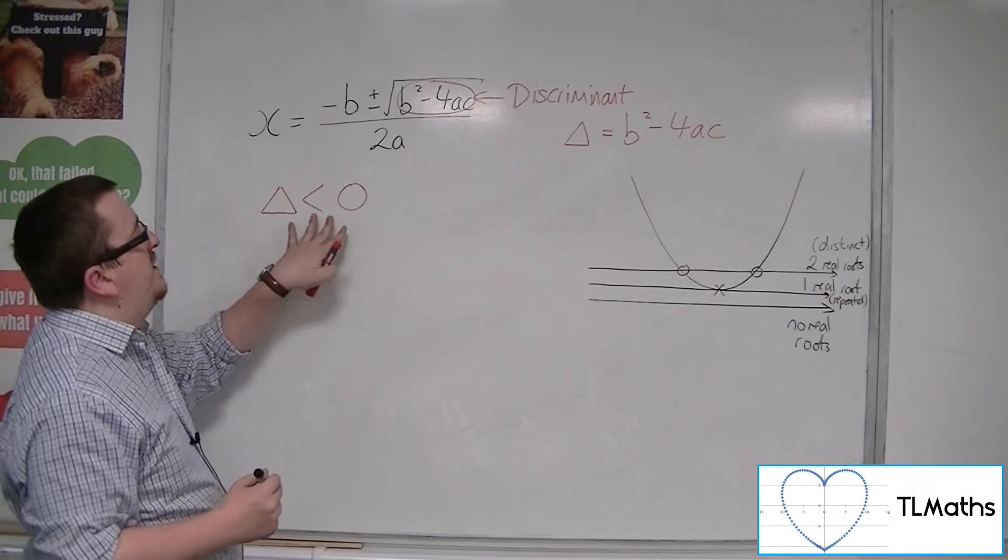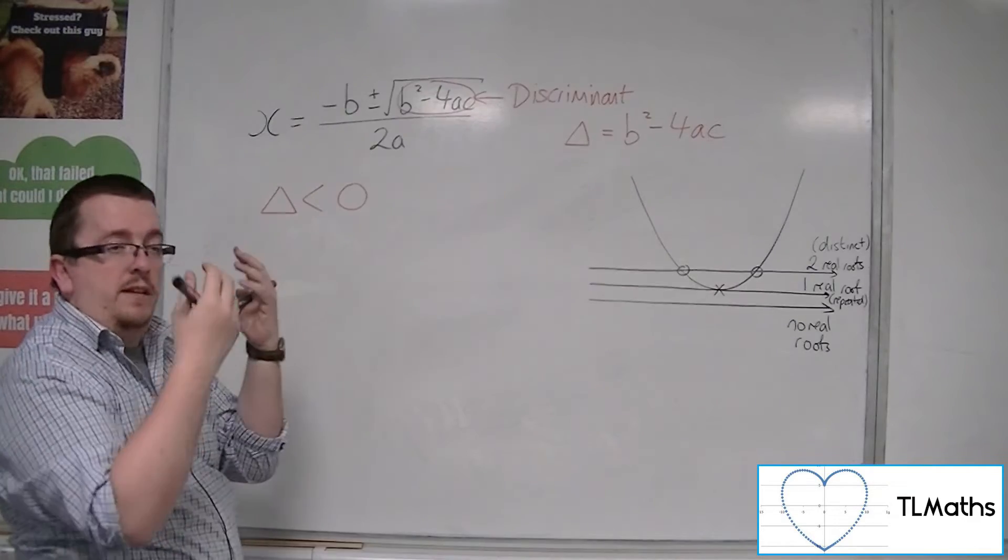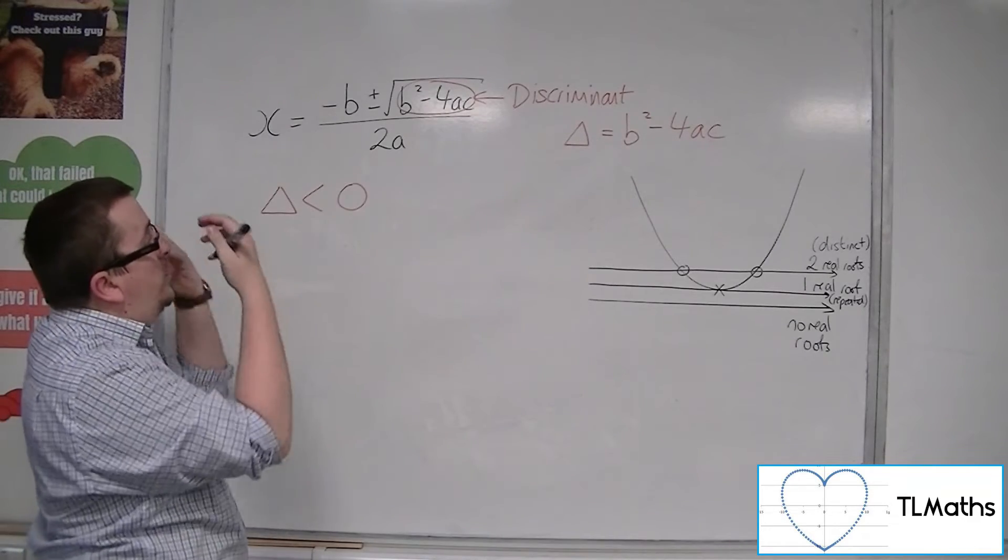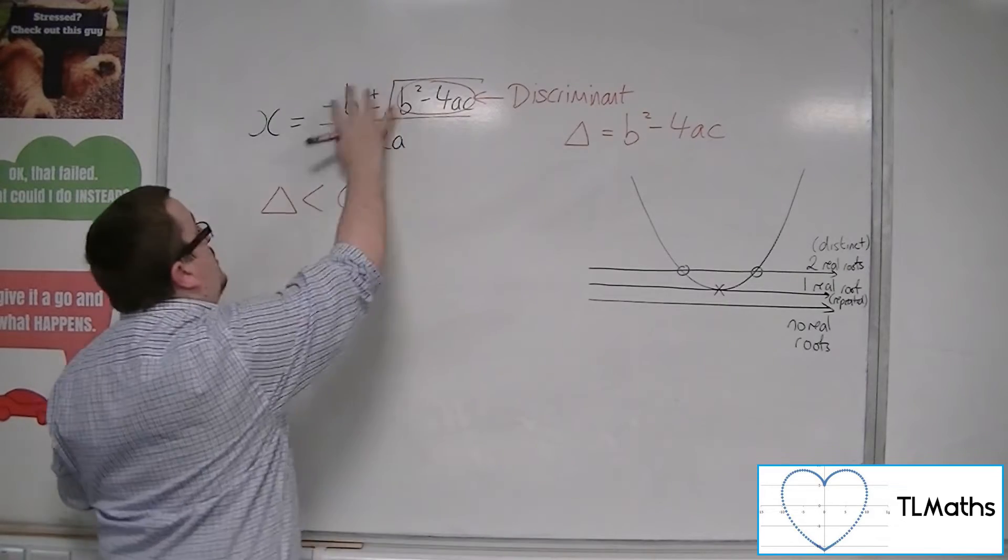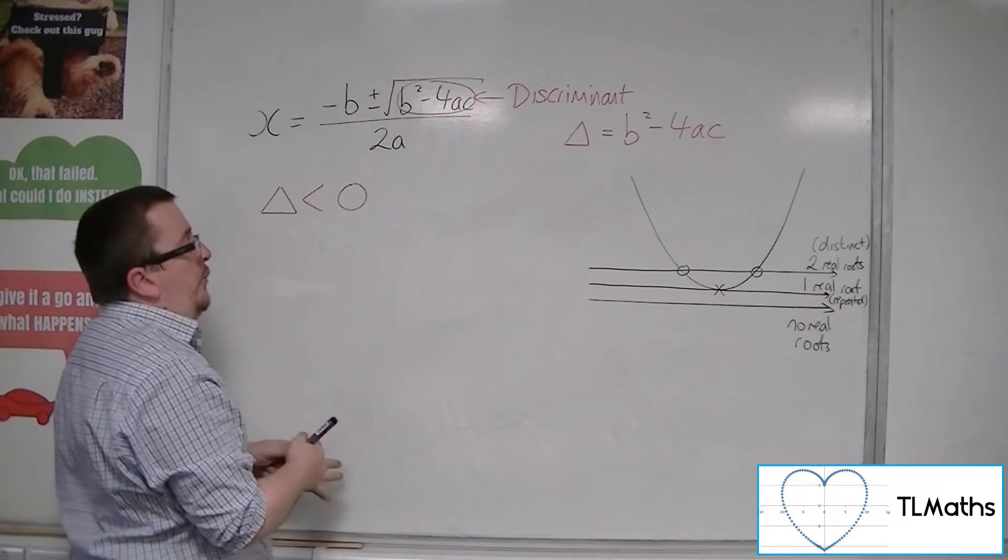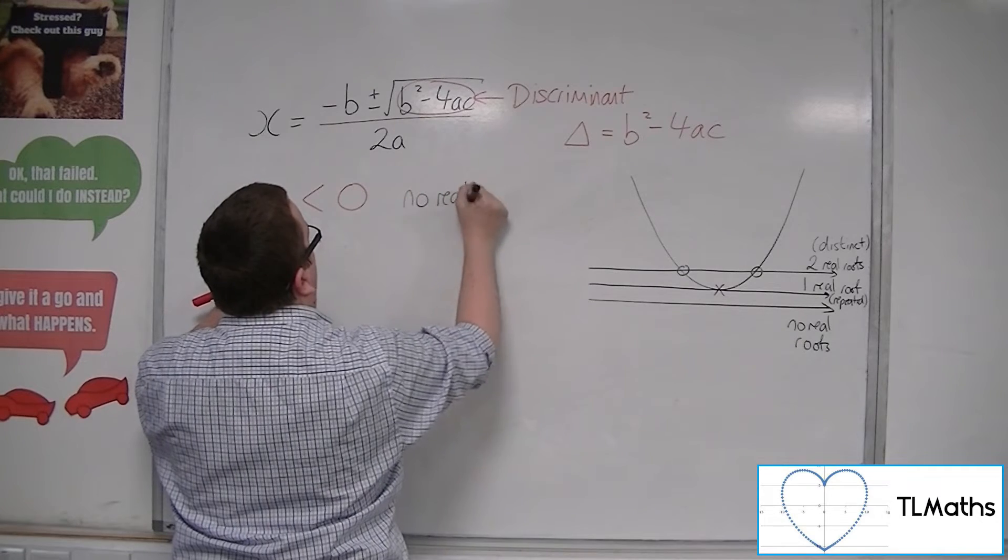So when we've got this discriminant, that bit inside the square root is negative, and so you can't square root it. And so that must mean that there are no values of x that it works for. So this means that there are no real roots.